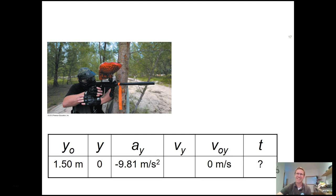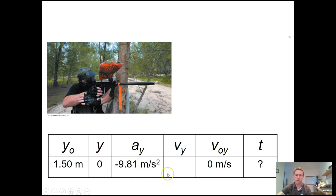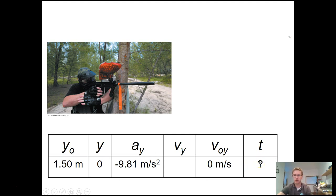Moving on to the y direction — here are our y variables. Our initial y height is 1.5 meters, and it ends at the ground, which is 0 meters. Our acceleration is gravity in the downward direction, negative 9.81 meters per second squared. I don't know or care about the final y-velocity, so I'll leave that blank. My initial speed in the y direction is 0 meters per second, and the time is what we're trying to solve.